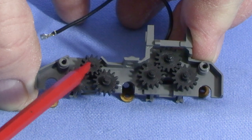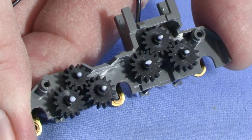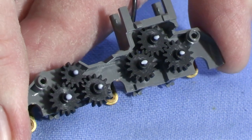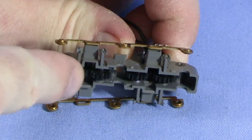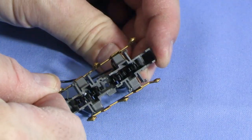Before I put the gearbox back together, I'll put a dab of white grease on the other end of each gear shaft. It's a good idea to make sure the gears rotate freely.